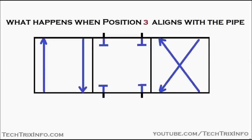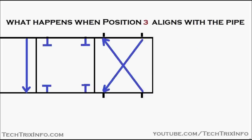In the same way, when position three aligns with the pipe, the flow is reversed. That's what position three does — it reverses the flow direction compared to position one.